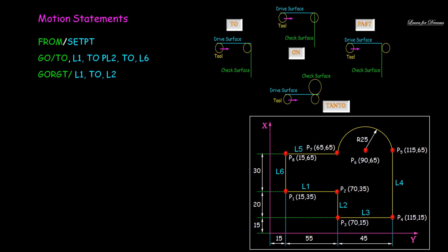From point 2 to point 3, again GO RIGHT slash L2 PAST L3. Here PAST is used because the tool will stop after L3.